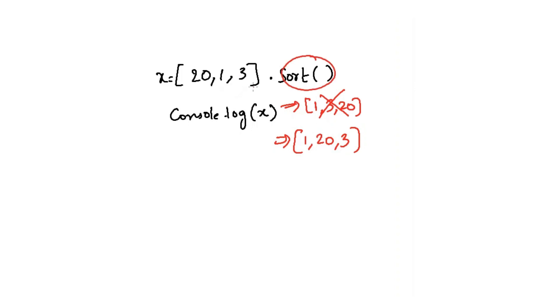What this sort method will do? It will convert each element of this array into a string. Now our expression will become string 20, 1, 3, and it will sort them lexicographically.